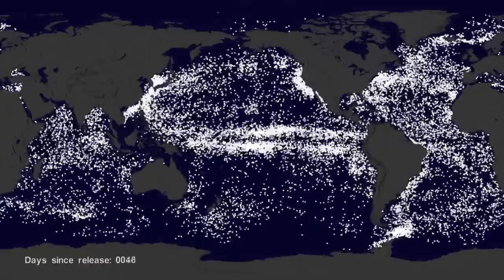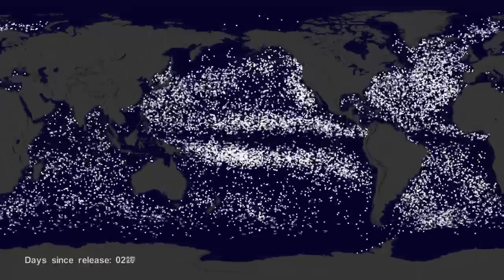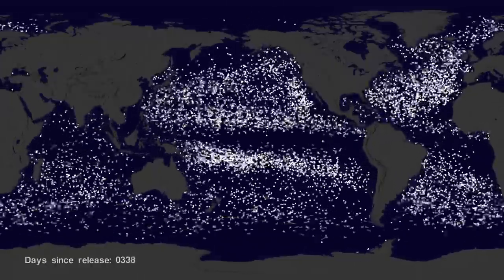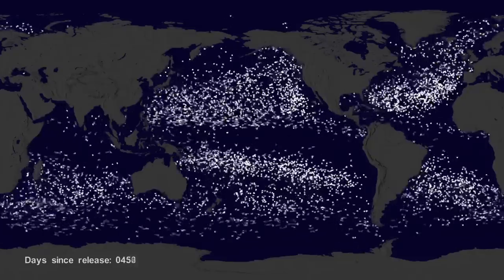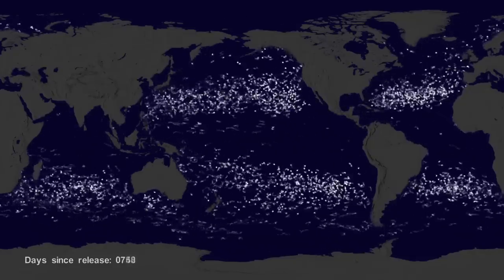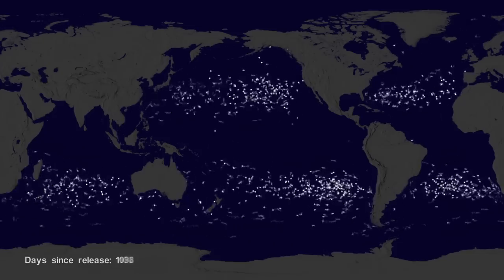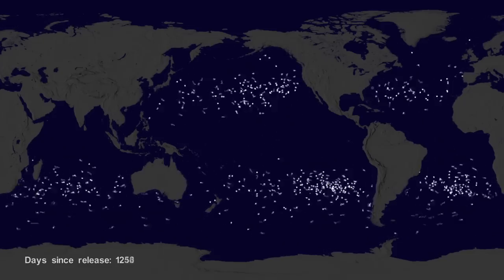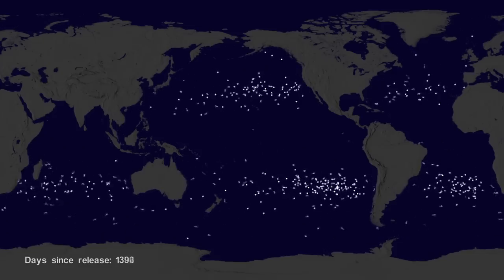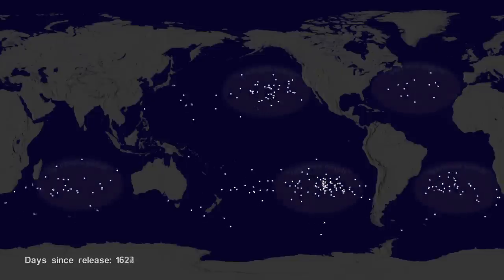If we let all the buoys go at the same time, we can observe buoy migration patterns. The number of buoys decreases because some buoys don't last as long as others. The buoys migrate to five known gyres, also called ocean garbage patches.